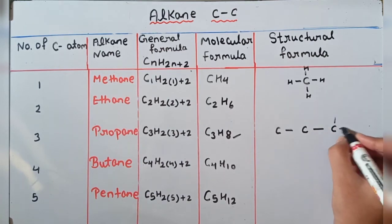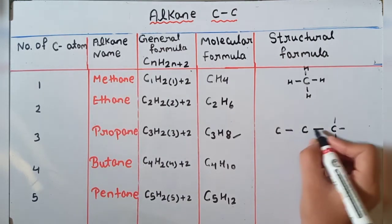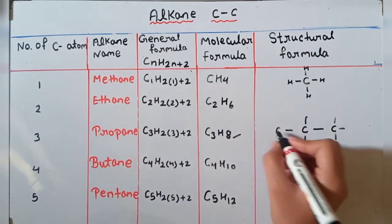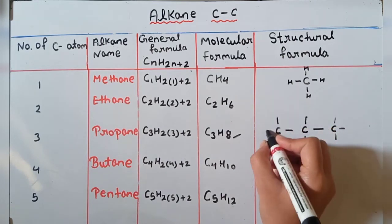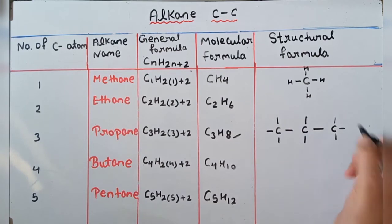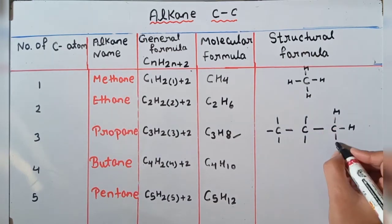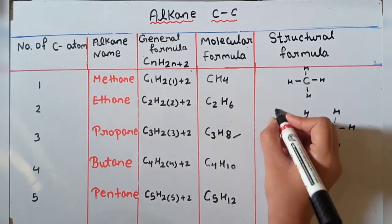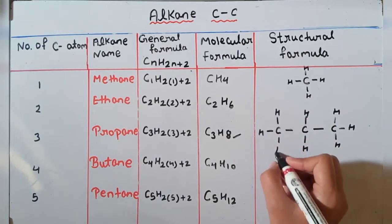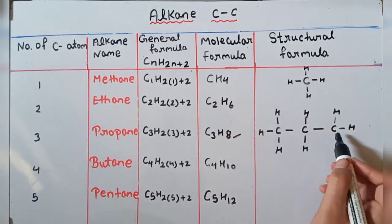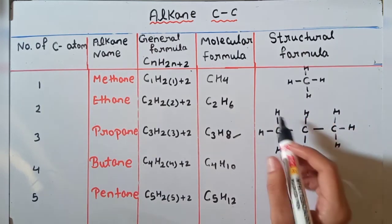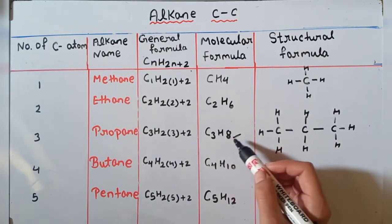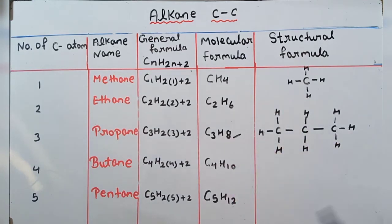Ab carbon ki valency complete karenge — 4 bond hone chahiye. Yeh carbon hai, yahan par ek hi bond hai aur kitne chahiye 3. Is carbon ke paas 2 bond hain aur kitne chahiye 2 more. Yahan par ek hi hai aur 3 chahiye. Hydrogen show kar lete hain. Ab count kar sakte ho — carbon 3 hain aur hydrogen count kijiye: 1,2,3,4,5,6,7,8 — that is C3H8.